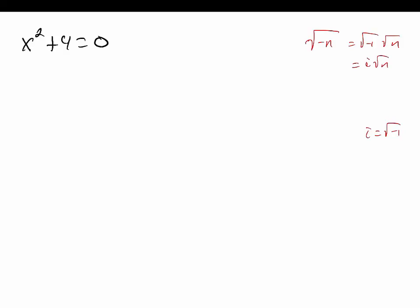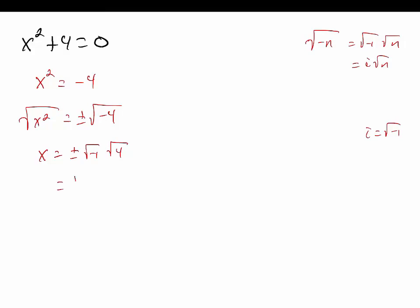So I'm going to subtract 4 from both sides and take the square root of both sides. I'll separate this into the square root of negative 1 and the square root of 4. The square root of negative 1 is i, and the square root of 4 is 2. So there are two solutions: negative 2i and positive 2i.